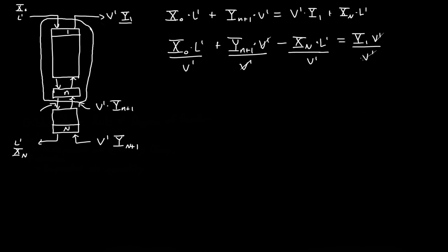This v prime and this v cancel out. So we're left with x naught times l prime over v prime plus yn plus 1 minus xn, that's supposed to be a little n not a big n, times l prime over v prime is equal to y1.